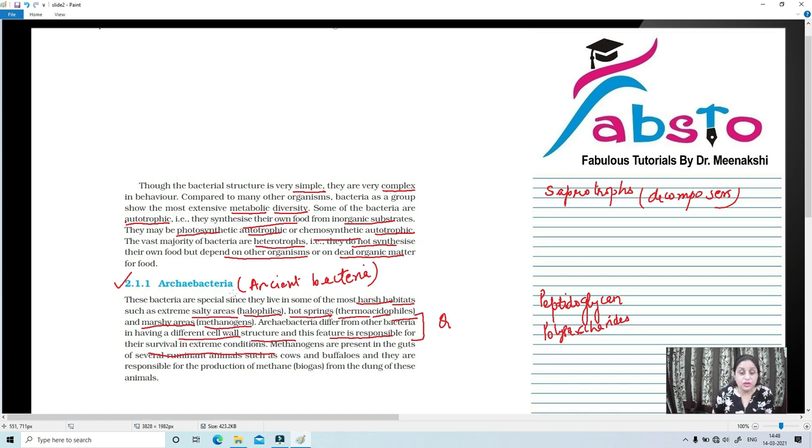Methanogens we are going to talk about. Methanogens are present in the guts, that means alimentary canal, of several ruminant animals. Ruminant animals are like cattle, cows and buffaloes. And they are responsible for the production of methane or biogas from the dung of these animals. We know that ruminant animals have different stomachs present instead of a single stomach. Different portions of the stomach are present. So in their rumen portion of cows and buffaloes, methanogens are present, these methane-producing bacteria. That is why from their dung we can make biogas.